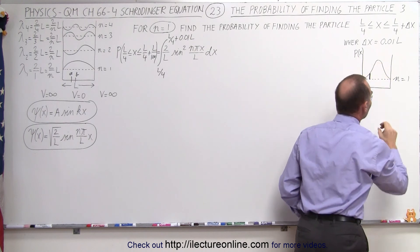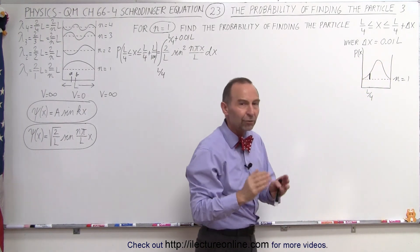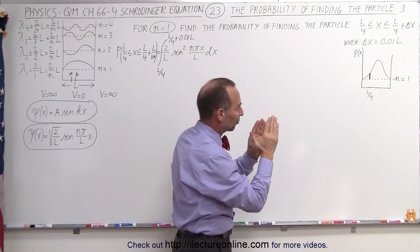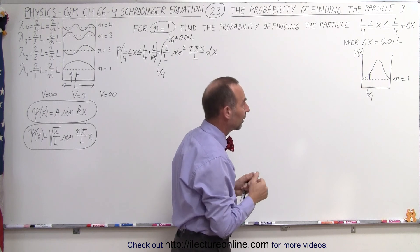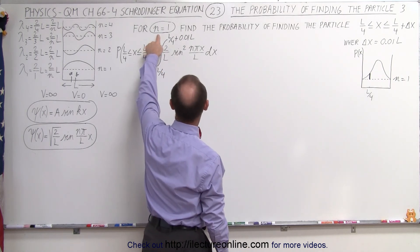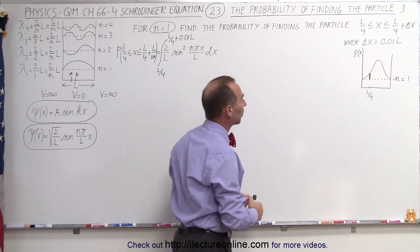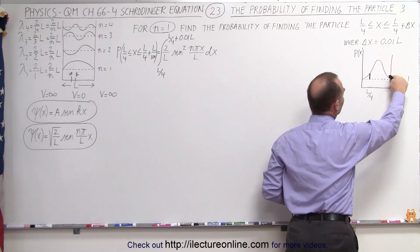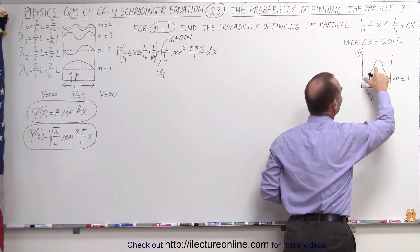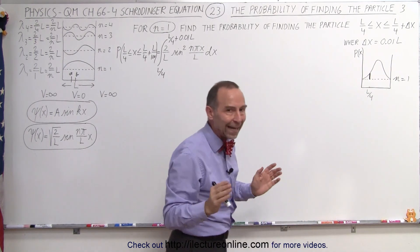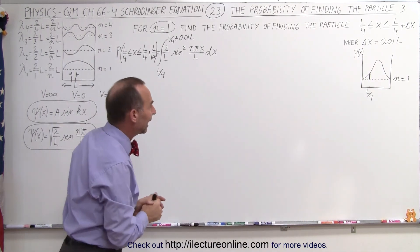Delta x in this case is going to be 0.01L. Of course, we can arbitrarily make the delta x smaller and smaller and smaller. Again, what we're doing here is finding at n equals 1, at the first energy level, which means that this here is our probability density function or probability function of finding the particle at any point between 0 and L.